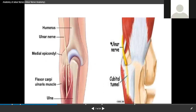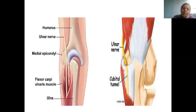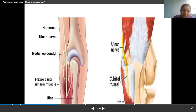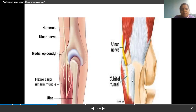In the arm, we have muscles like biceps, brachialis, and coracobrachialis, but the ulnar nerve is not giving any nerve supply there. It just passes. Then it pierces the lateral intermuscular septum and enters the anterior compartment of the cubital fossa, where it begins supplying muscles of the forearm.